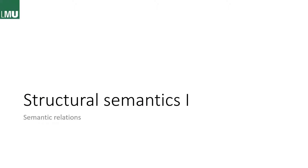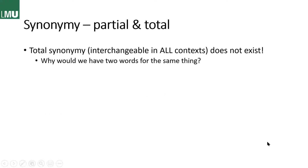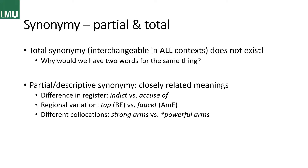Now let's go into structural semantics and focus on semantic relations first. Synonymy is a very common concept. We have partial and total synonymy. Total synonymy means a word is interchangeable in any context, but that is a utopia — it doesn't exist, because why would we have two words for the exact same thing? What is very common is partial or descriptive synonymy, where we have very closely related meanings but some small difference — for example in register, we have 'indict' and 'accuse.'